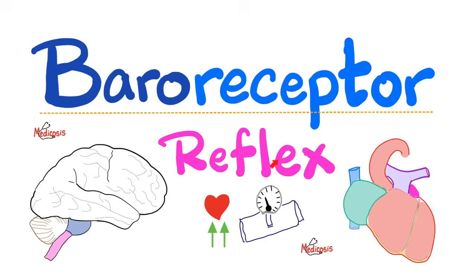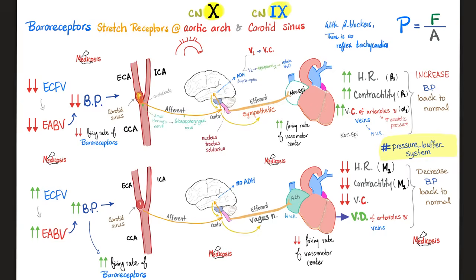Let's talk about the baroreceptor reflex. Suppose that we start with hypotension. The baroreceptors will feel it — they are located in the carotid sinus via the glossopharyngeal nerve and the aortic arch via the vagus nerve. They send afferent fibers to the brain, signaling hypotension. The brain sends sympathetic efferent fibers — fight or flight. The sympathetic raises the heart rate, increases contractility which increases stroke volume, and constricts the arteries and the veins. All of this raises the blood pressure back to normal.